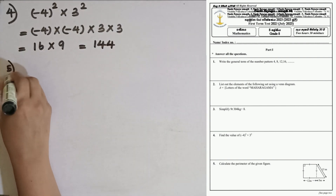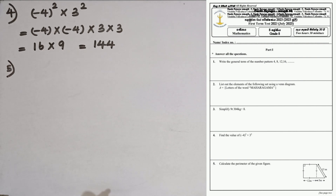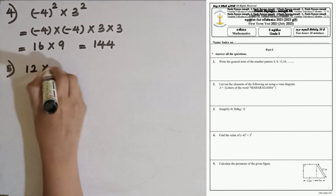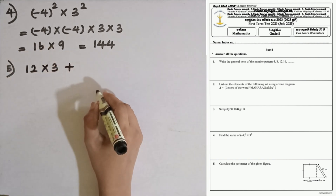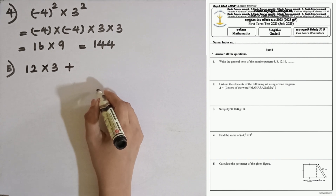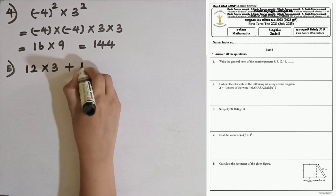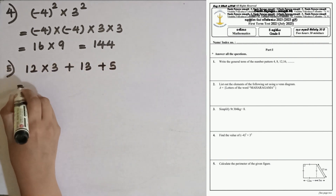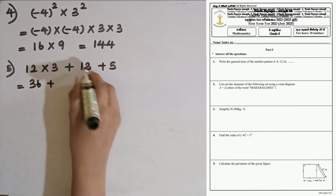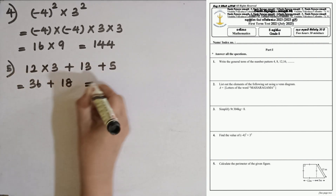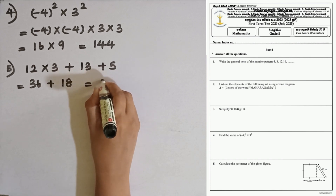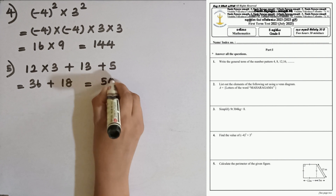Question number 5. Calculate the perimeter of the given figure. We take the addition of the surrounding lengths. For the square, 3 sides contribute to the perimeter: 12 multiplied by 3. Then the hypotenuse of the triangle and the remaining side 5: 13 plus 5. 12 times 3 is 36, and 13 plus 5 is 18. Total perimeter is 54 meters.